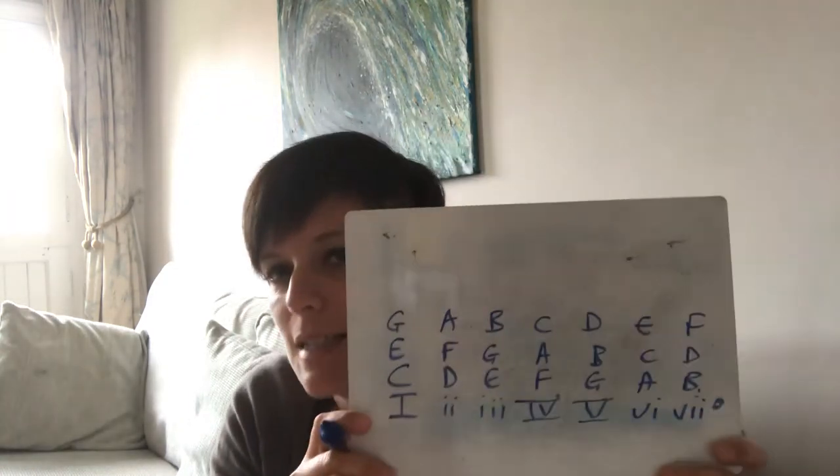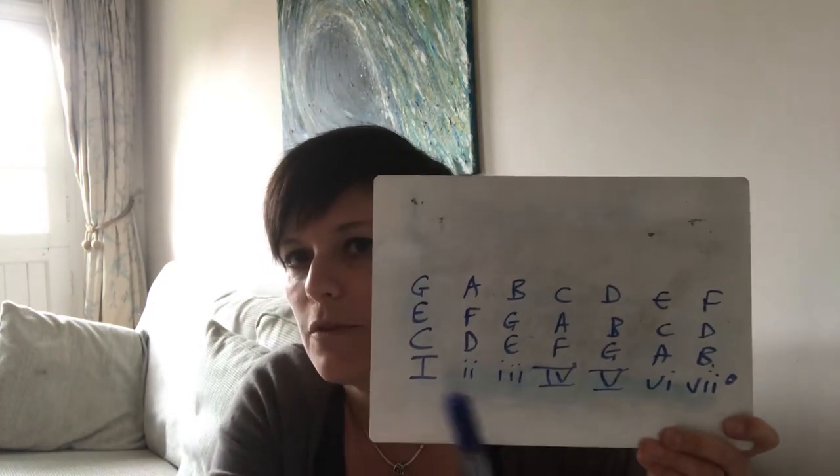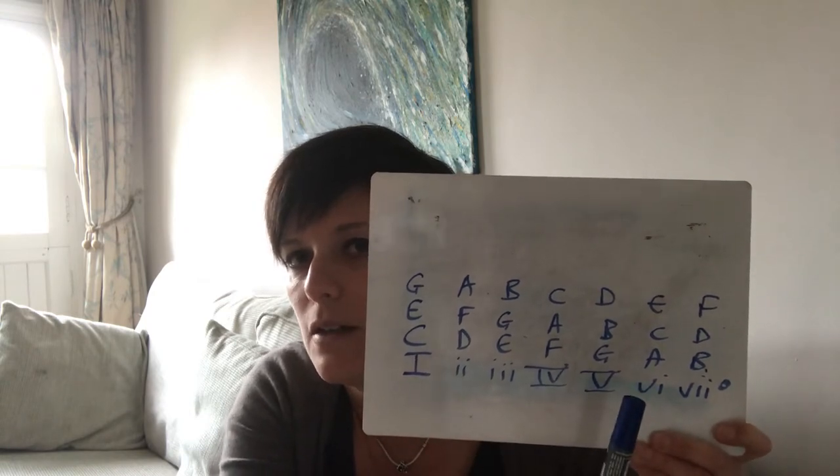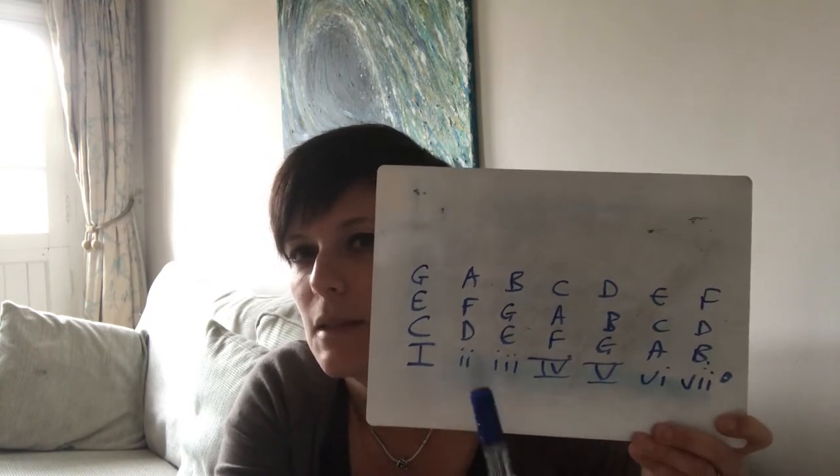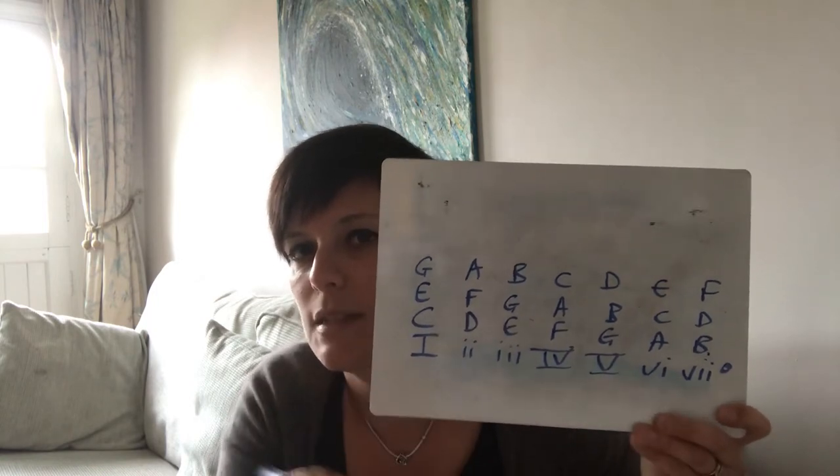Chord 7 is what we call a diminished chord. It's got a very distinct sound to it. But for now, I just want you to see that chord 1, 4 and 5 are in capital Roman numerals because they're major and 2, 3, 6 are lowercase because they're minor and chord 7 is also lowercase as well.